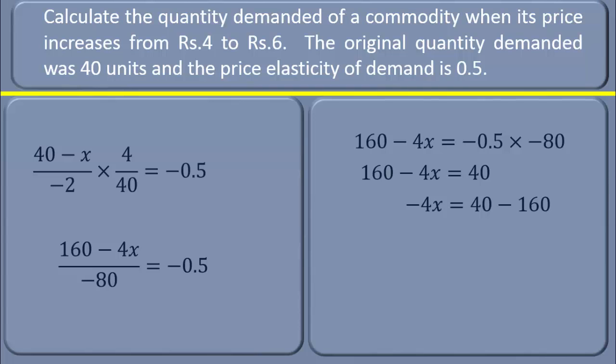-4x = 40 - 160. We added -160 on both sides. We have -4x = -120. -120 divided by -4. That is equal to 30.